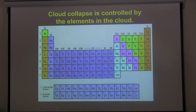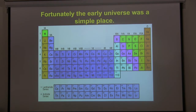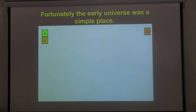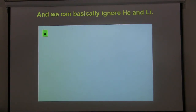The collapse of clouds in the modern universe is controlled by many elements, but in the early universe we only really have to worry about three: hydrogen, helium, and lithium. To be honest, we can ignore helium and lithium. So for the purposes of today's talk, this is the periodic table I'm going to work with. Having trained as an atomic physicist, I'm very happy to start here.